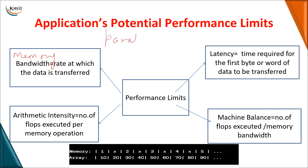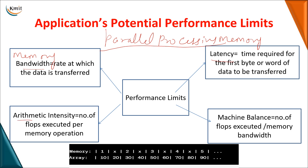It might be on multiple systems or multiple cores, so you need to be very clear about the bandwidth. Similarly, another performance limit can be memory latency — the time required to get the first byte of data. The next one is arithmetic intensity, which is the number of floating point operations (FLOPs) executed per memory operation. And machine balance is the number of FLOPs executed divided by the memory bandwidth. These are the four major performance limits when going for a parallel processing application.